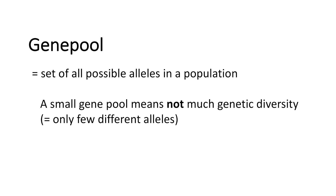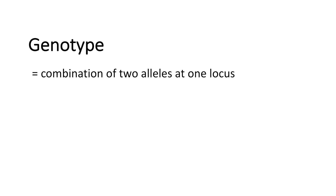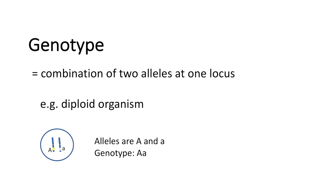What is a genotype? A genotype is the combination of two alleles at one locus. We have a diploid organism, like humans for example, and we have alleles that are either A — the uppercase A and the lowercase a — so the genotype is uppercase A, lowercase a.